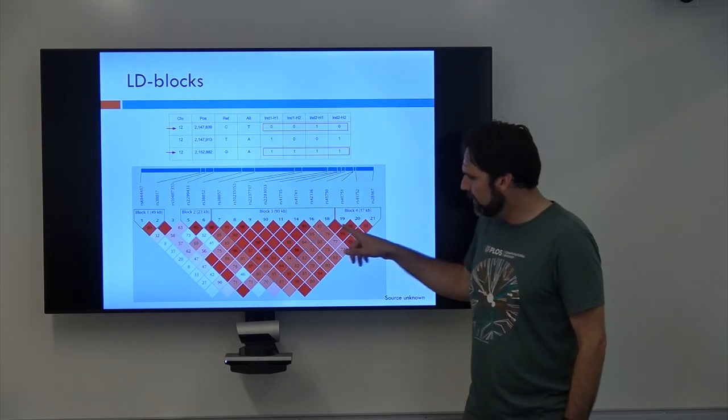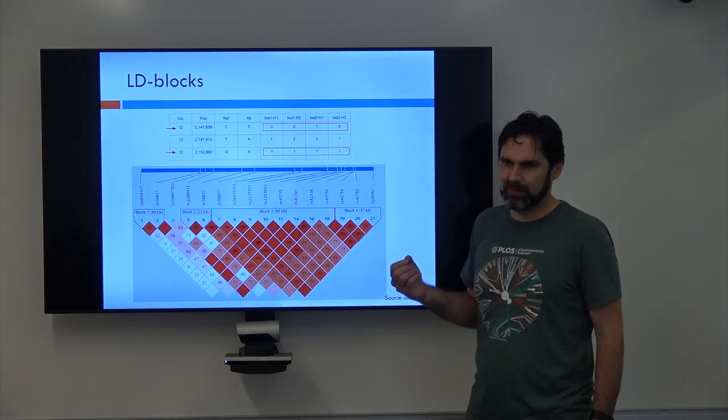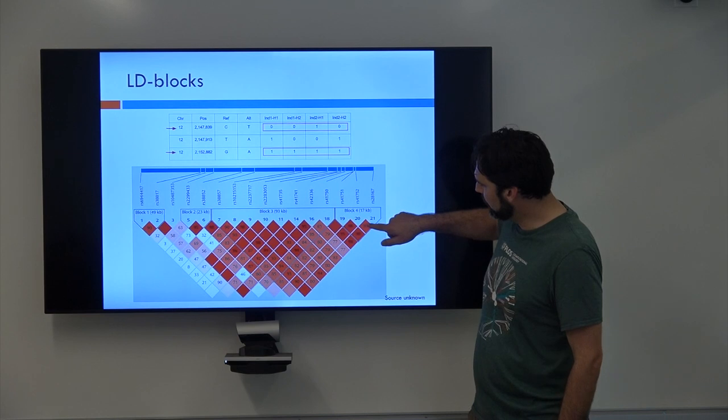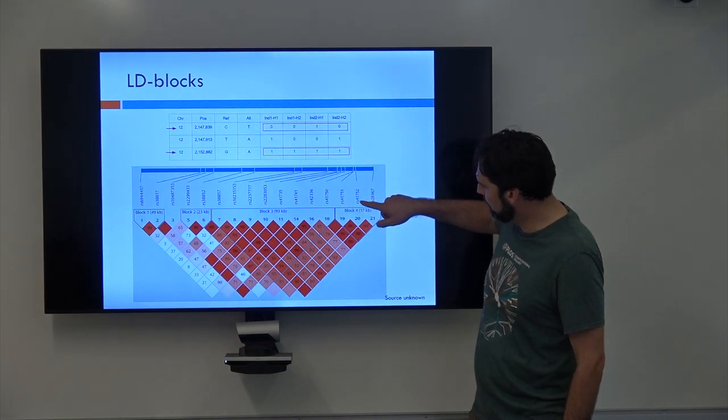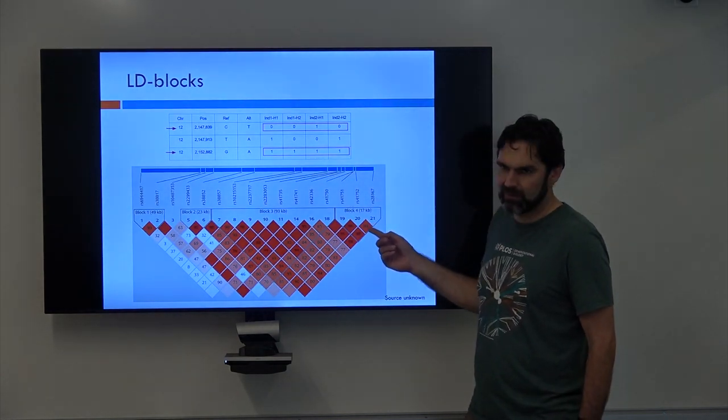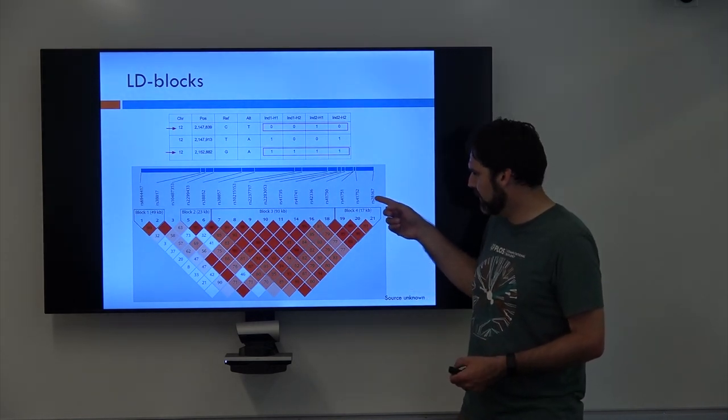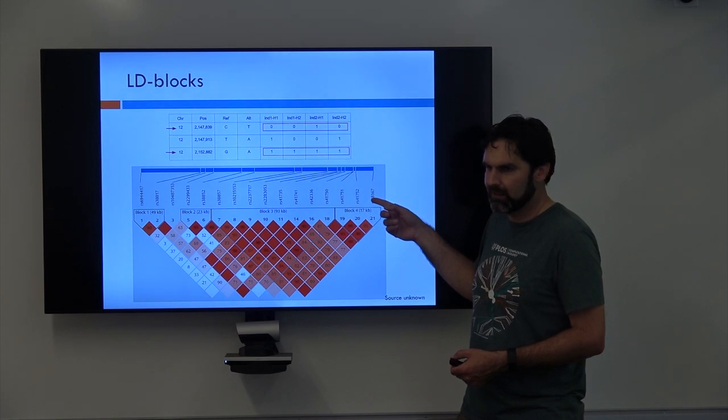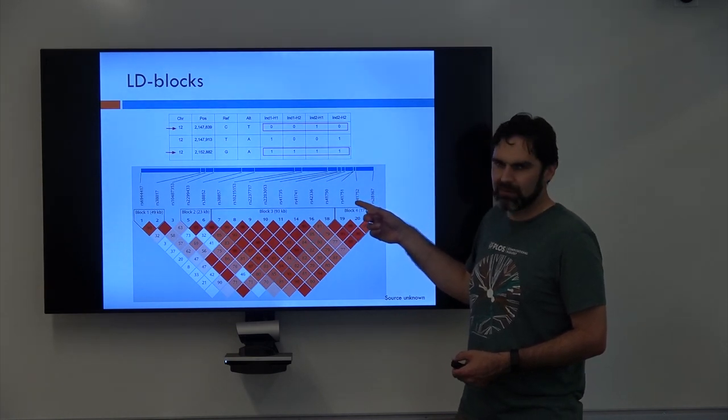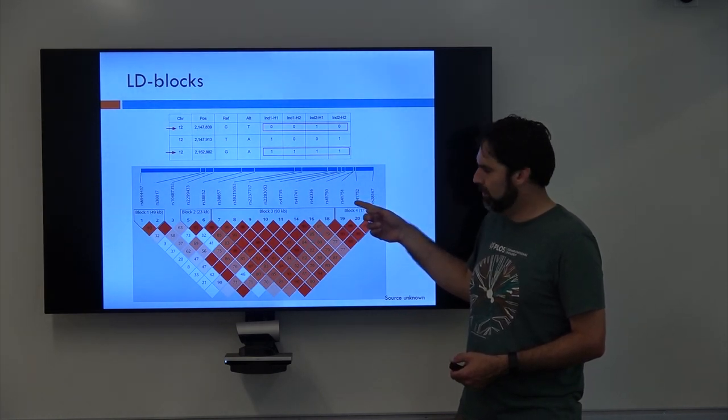And then down here these tell you the amount of linkage between any two SNPs. This first box refers to the first SNP and the second SNP and you can see that it has a linkage score of 93. So if I tell you the allele for this RSID SNP in an individual, you have a good shot of guessing what's at this SNP as well.